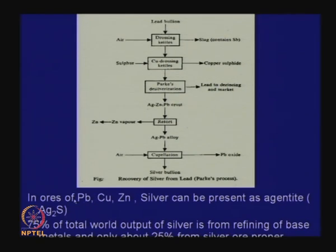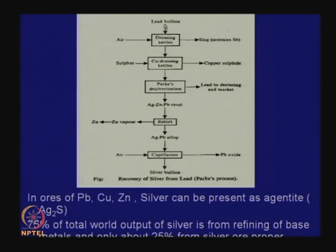I have mentioned how you remove silver during refining of the lead bullion that is produced in the lead blast furnace. Let us quickly go through that step again. The base bullion produced in the lead blast furnace contains many impurities and one important impurity is silver.